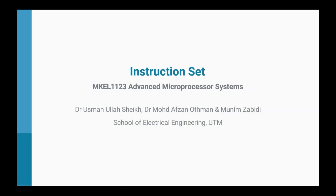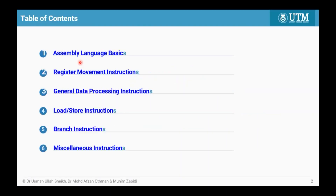Let's look at module six: the instruction set for assembly language. The table of contents covers assembly language basics, register movement instructions, general data processing including arithmetic and logical processing, subtraction and multiplication, load/store instructions, branch instructions, and others.